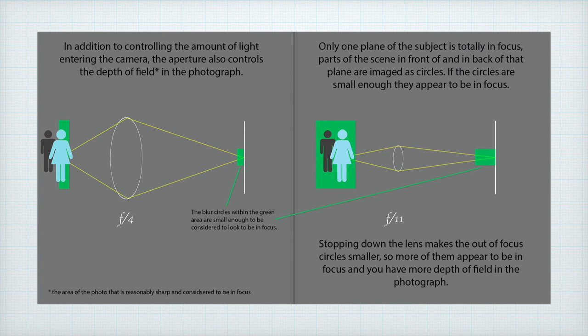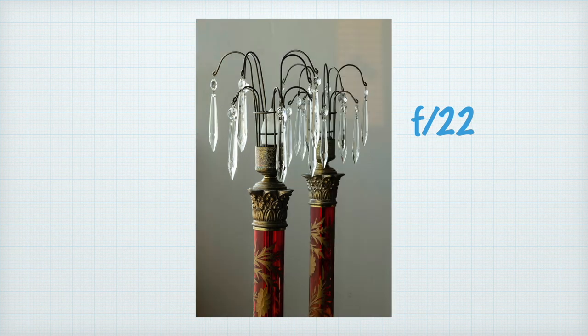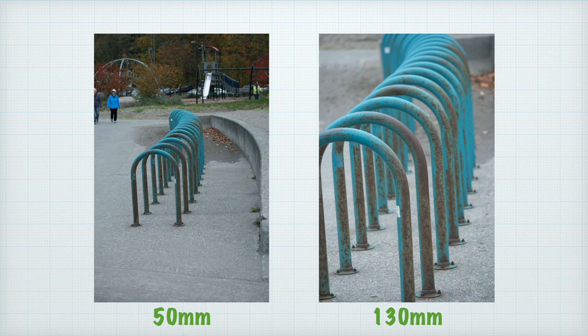Depth of field is an aesthetic decision and can be shallow or deep — there isn't a good or bad depth of field, it depends on what you want in the photograph. The start and end of the region is gradual, not a hard line. Depth of field is controlled by the f-stop and the magnification of the scene on the image sensor — the combination of focal length and camera-to-subject distance. It is also affected by the distance a print is viewed from. Contrary to a very popular belief, the focal length of a lens is not a factor in depth of field.